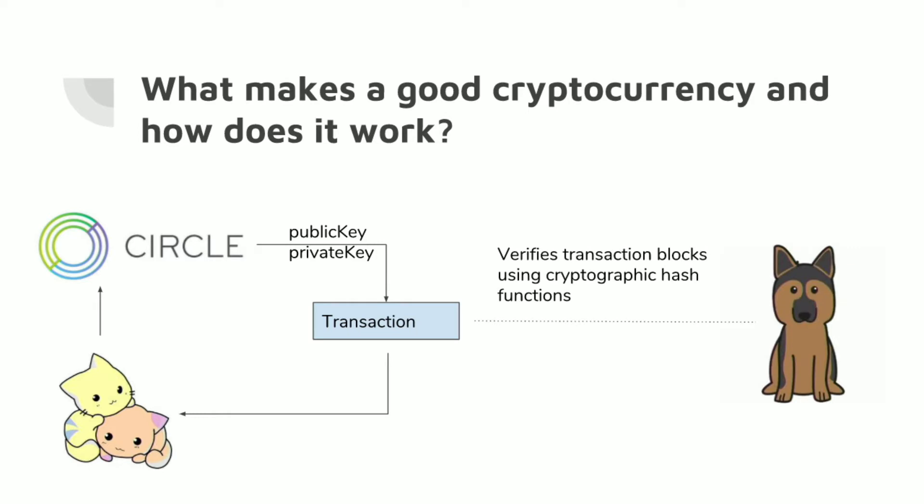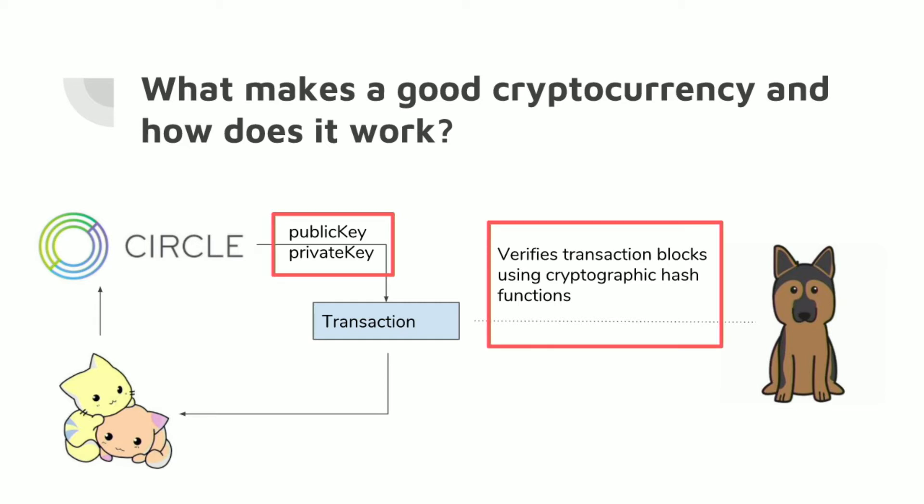On the other side, once this transaction is signed, the miners — represented by the dog — will group this into a new transaction block. Then this will use cryptographic hash functions in order to calculate the right hash. I'm going to touch on two things today: the idea of a digital signature and public identification, and also how the blockchain of transactions works.